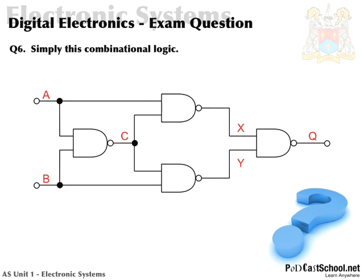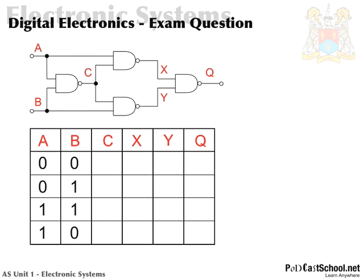So let's see how we do this. I've got the diagram again, and I've filled out A and B. Remember, in the last podcast I said that your inputs should always be: 0,0 / 0,1 / 1,0 / 1,1 — the standard way of doing things. And really, it's easy after this. All you've got to do now is fill out the table.